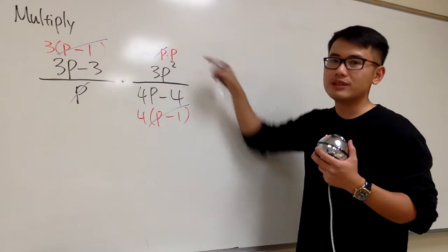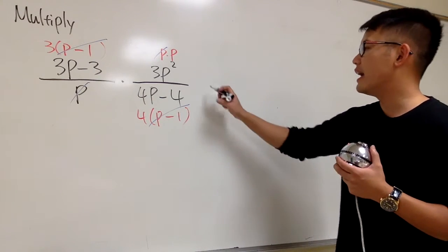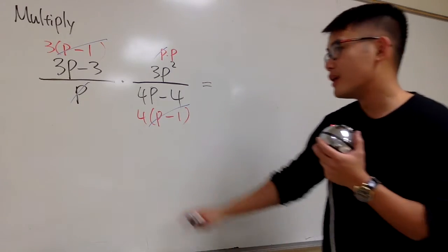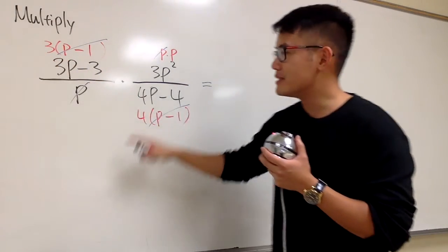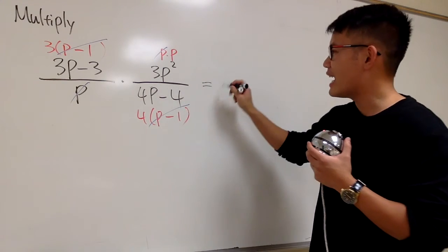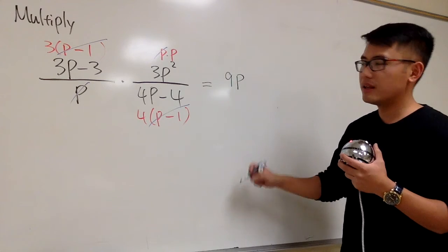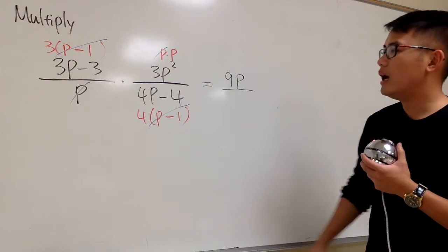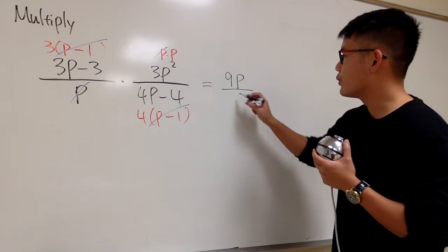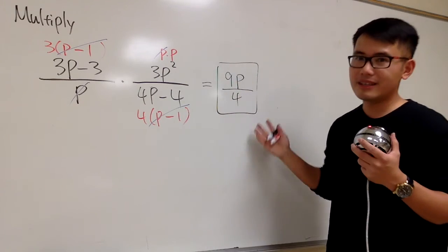The quicker way to do this is that we can just do 2 minus 1, subtract the powers, and you will end up with p to the 1st on the top as well. But overall, this is it. Let's see what the final answer is. On the top, we have this 3 times this 3 times p. 3 times 3 is 9, and then multiplying by p, so 9p. Over on the bottom, we just have this 4 left, so we put down the 4. 9p over 4. That's it.